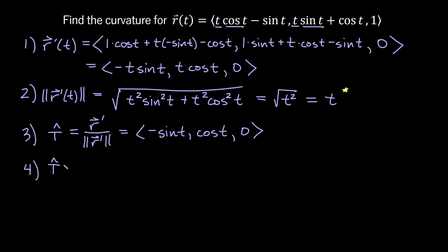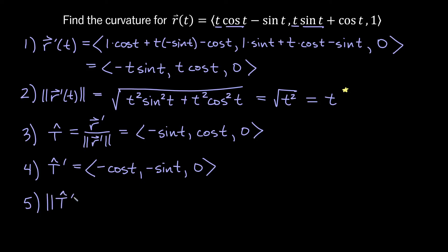We'll find T̂-prime, and the derivative here is straightforward: the derivative of −sin t is −cos t, the derivative of cos t is −sin t, and the derivative of 0 is still 0. So T̂-prime = ⟨−cos t, −sin t, 0⟩. The magnitude of T̂-prime is the square root of cos²t + sin²t + 0, which by the Pythagorean identity equals the square root of 1, so the magnitude is 1.